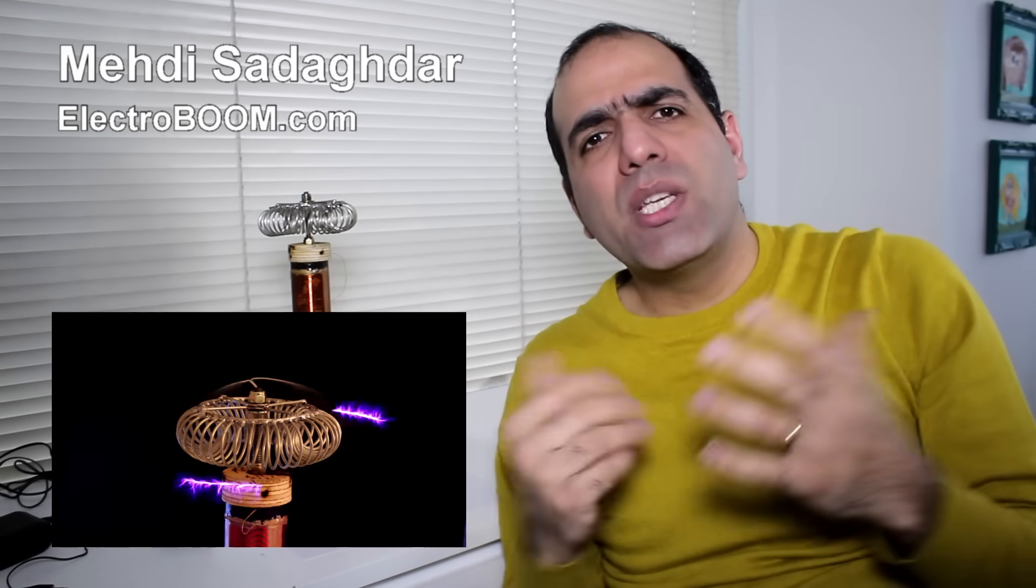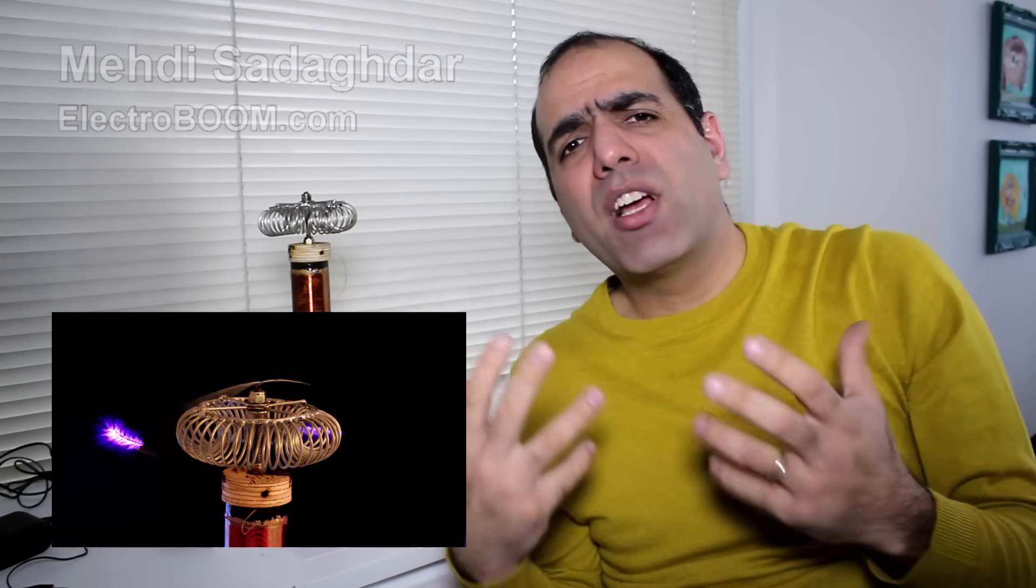I'd like to run my Tesla coil in vacuum to see what happens to the arcs. Do they disappear because there is no air to create plasma, or do electrons glow on their own and create these mysterious rays of electricity?